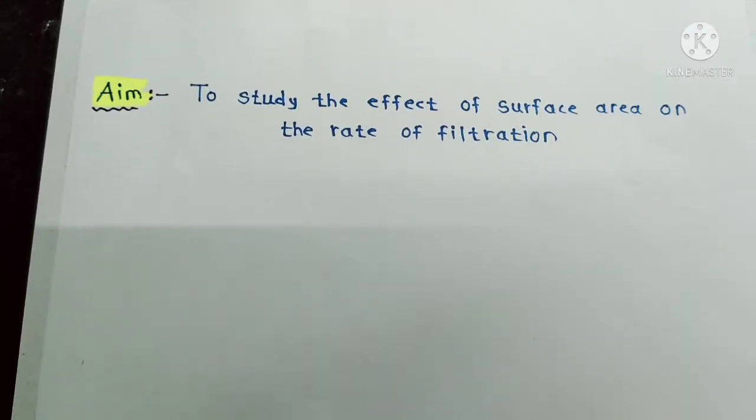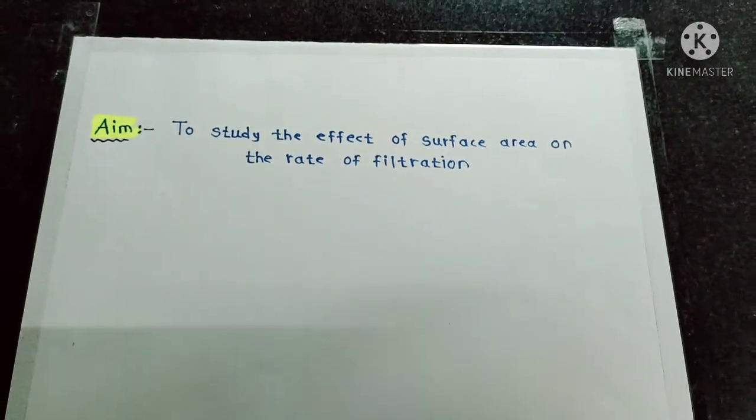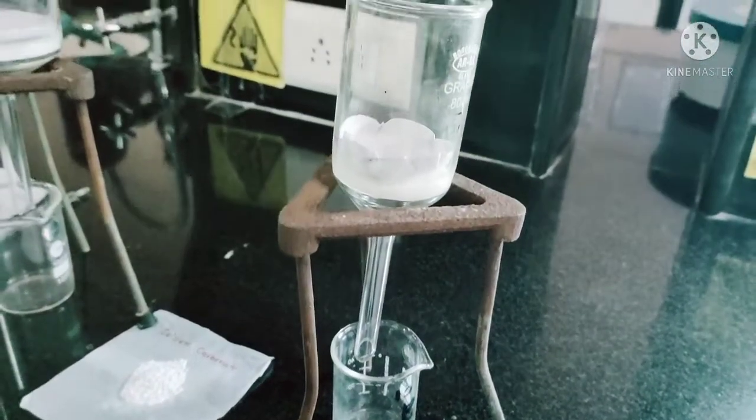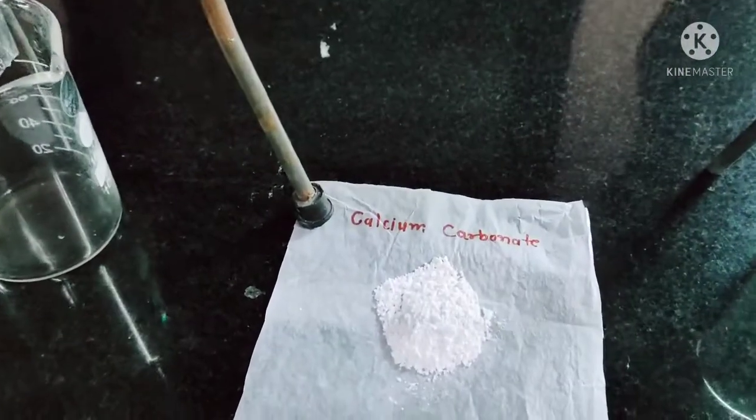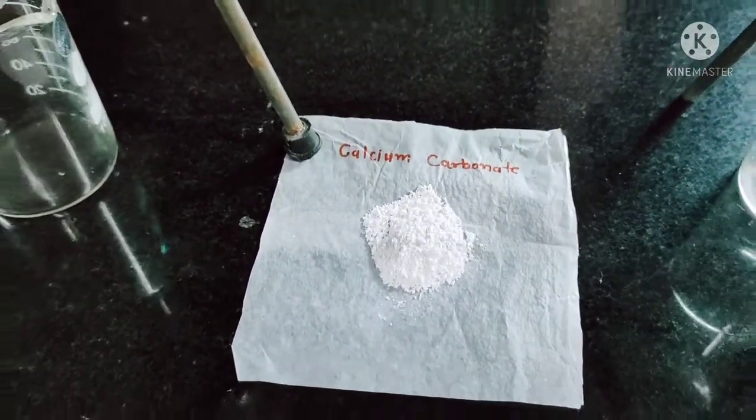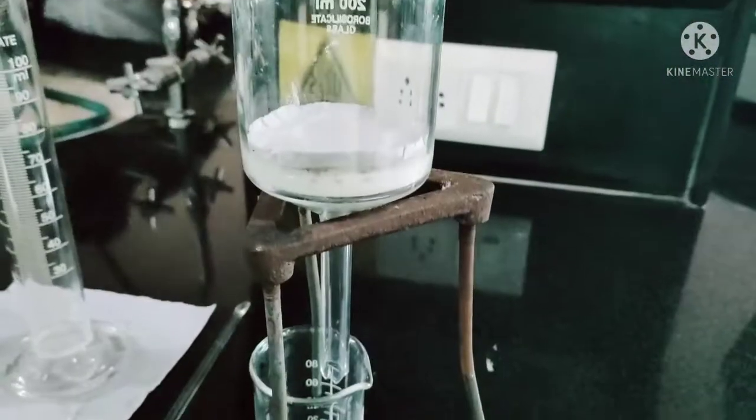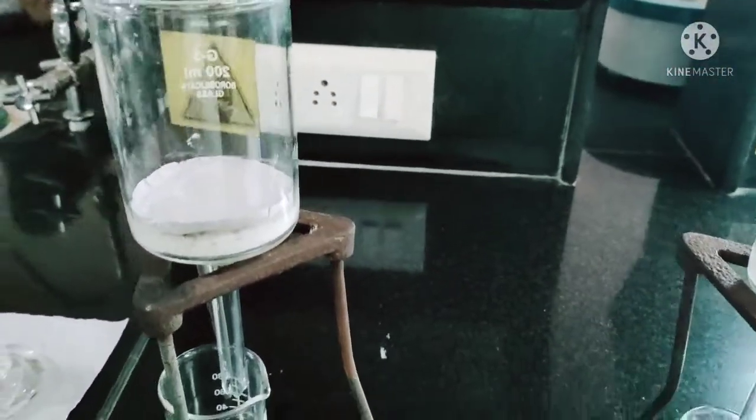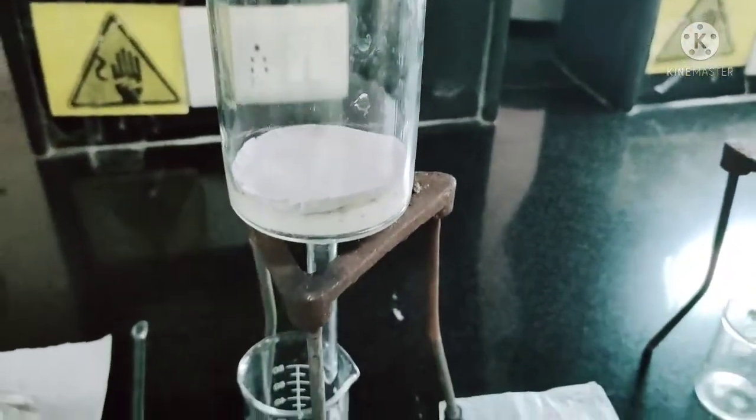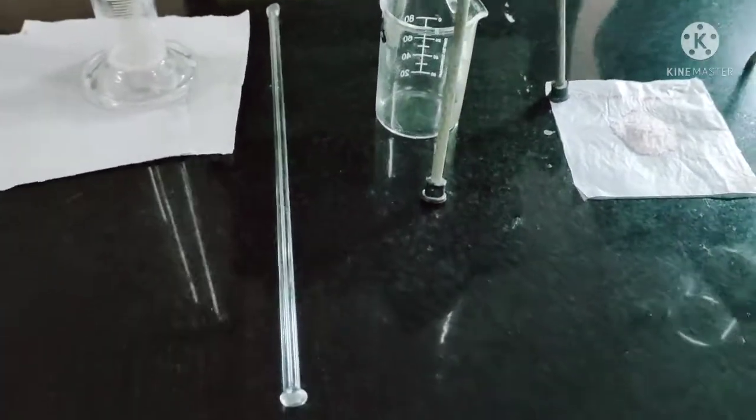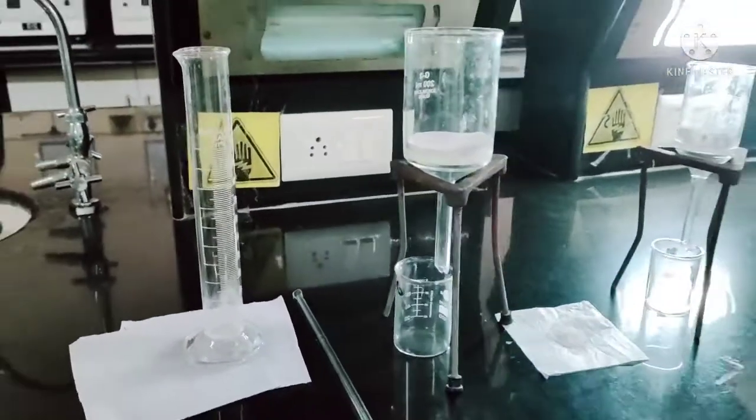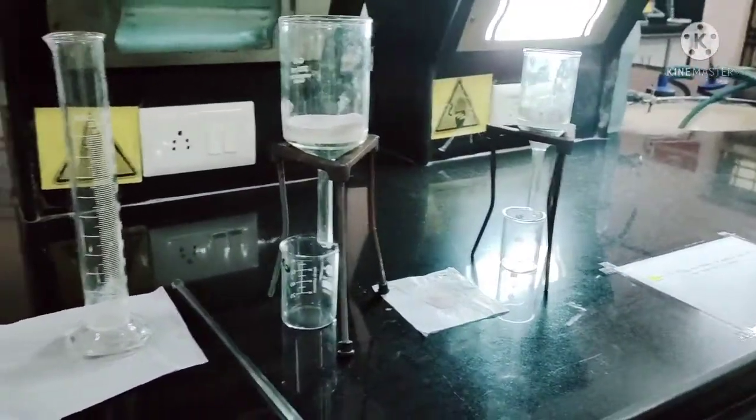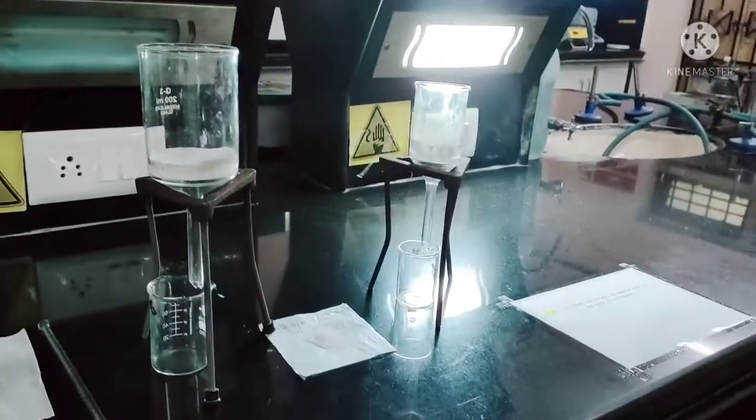The next practical is to study the effect of surface area on the rate of filtration. For this practical we require different types of Buchner funnel, calcium carbonate, beaker, filter paper, stand, stirrer, glass rod, measuring cylinder, and filter paper. We also require stopwatch.